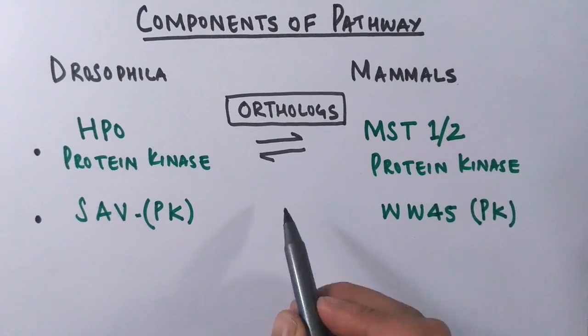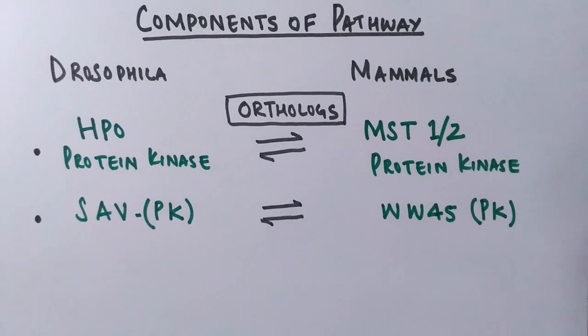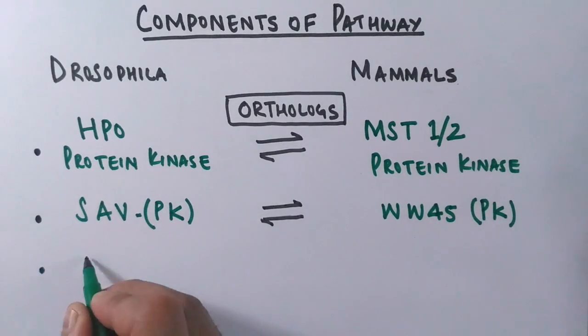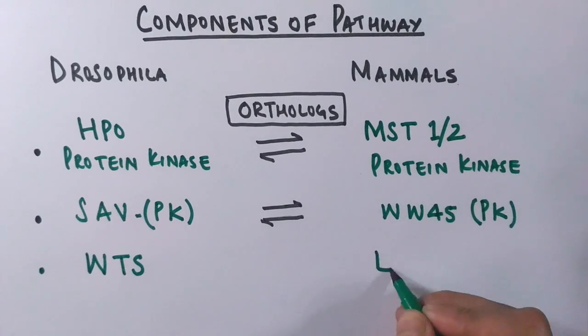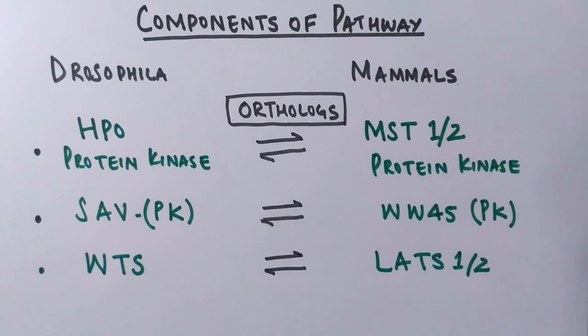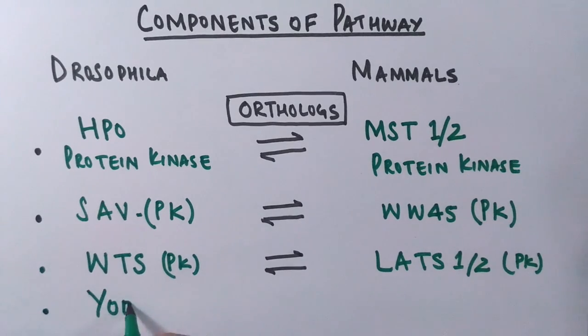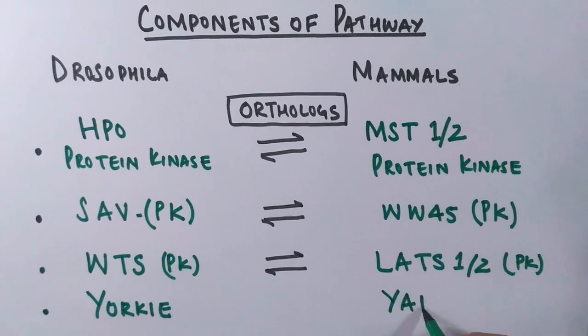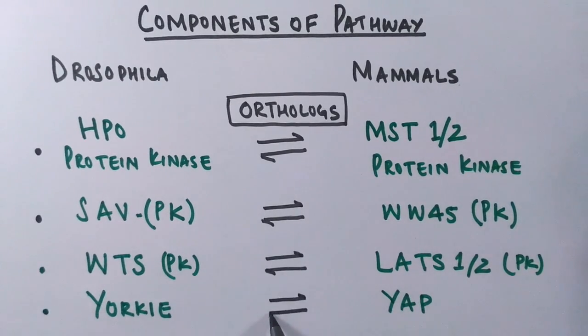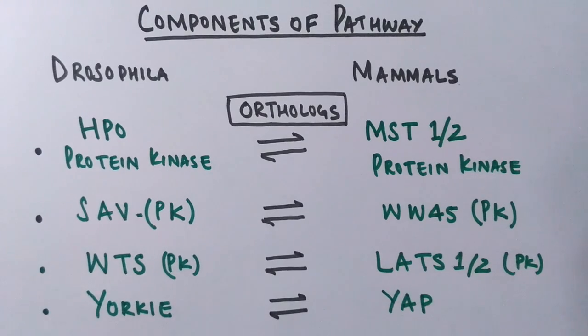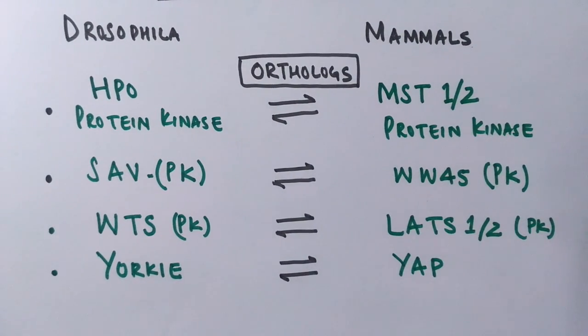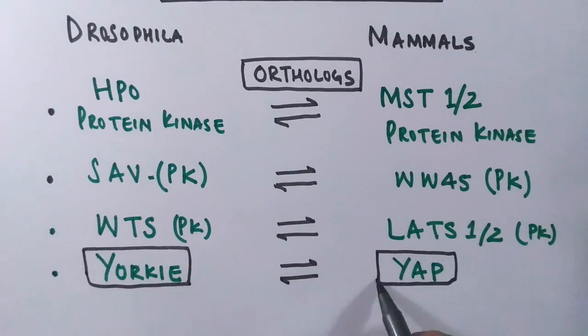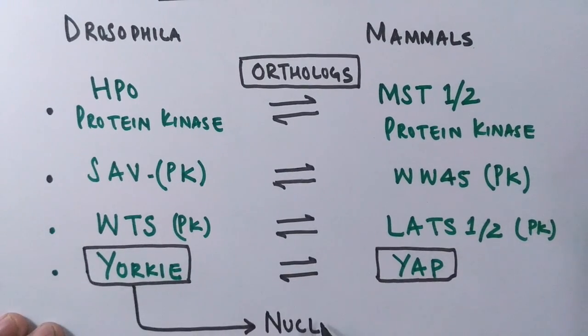Drosophila has got SAV protein kinase and mammals have WW45 protein kinase. Drosophila has got WTS, that's Wats protein kinase, and mammals has LATS 1 or 2 protein kinase. Drosophila has got Yorkie protein kinase and mammals have YAP, Yes Associated Protein. They are all nuclear protein kinases, Yorkie and YAP.